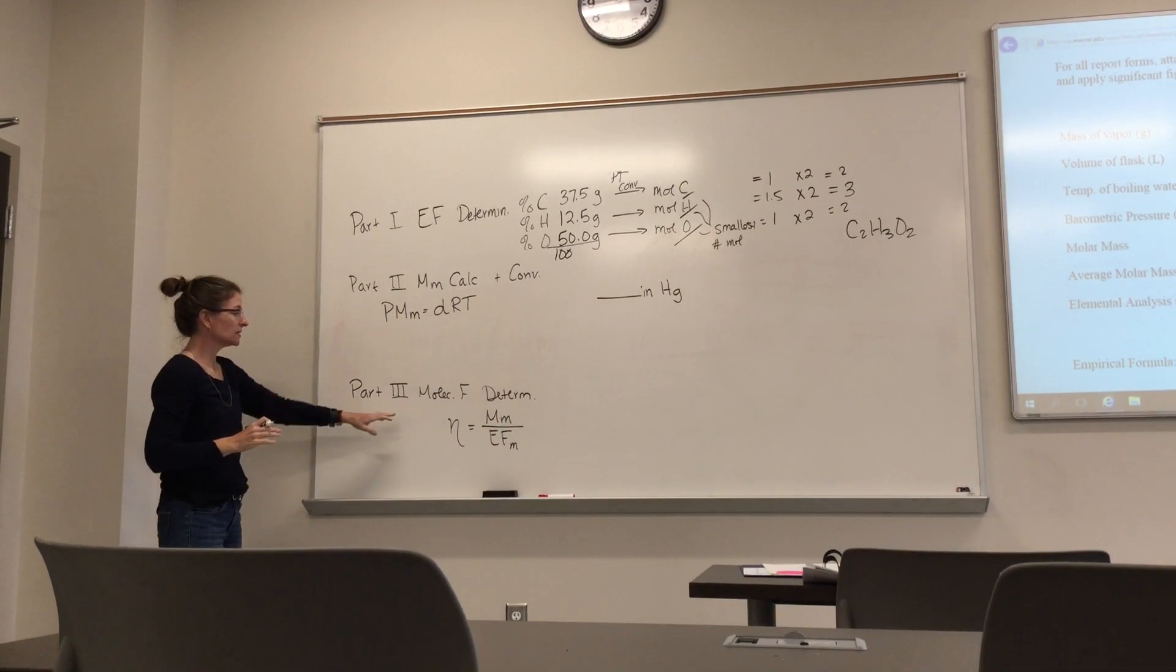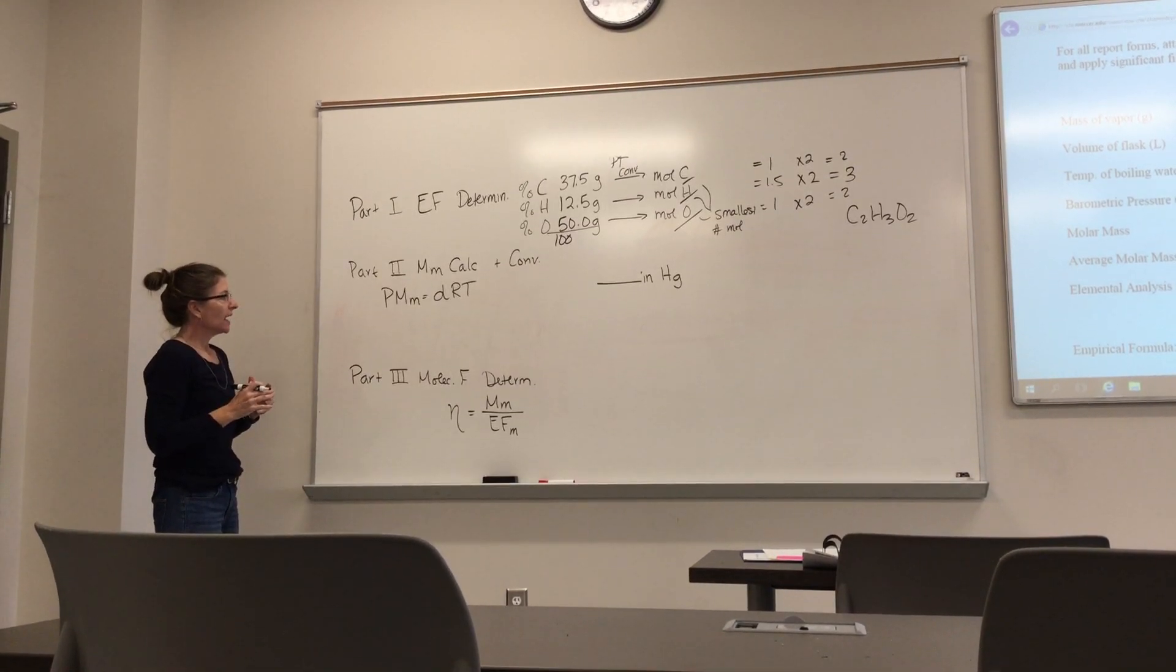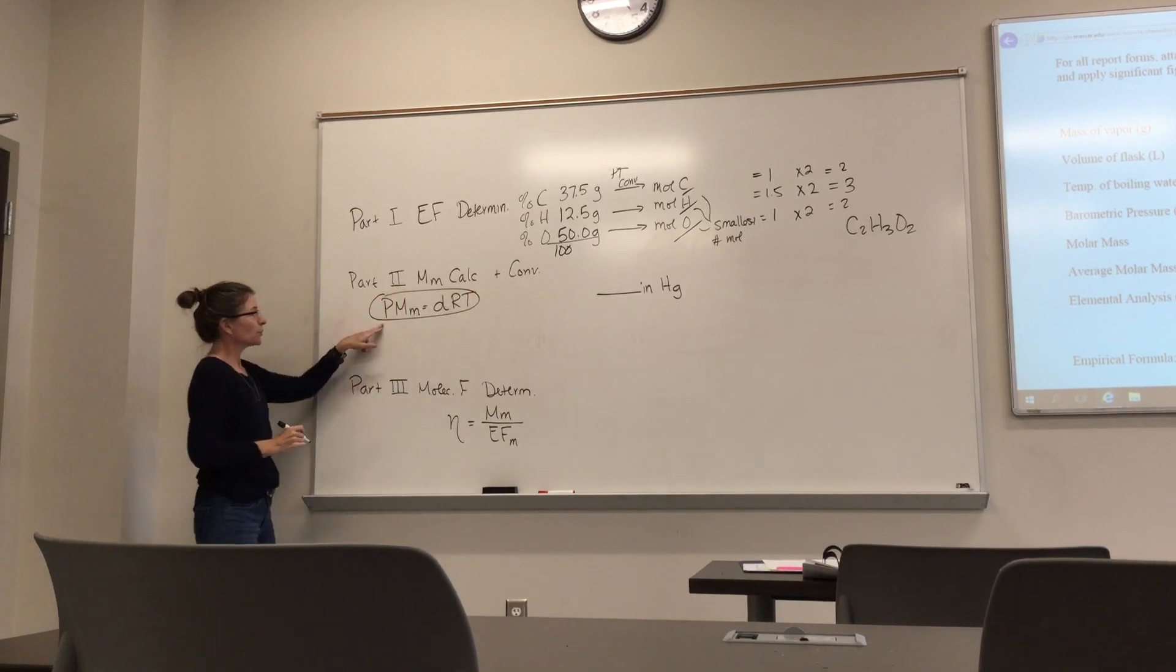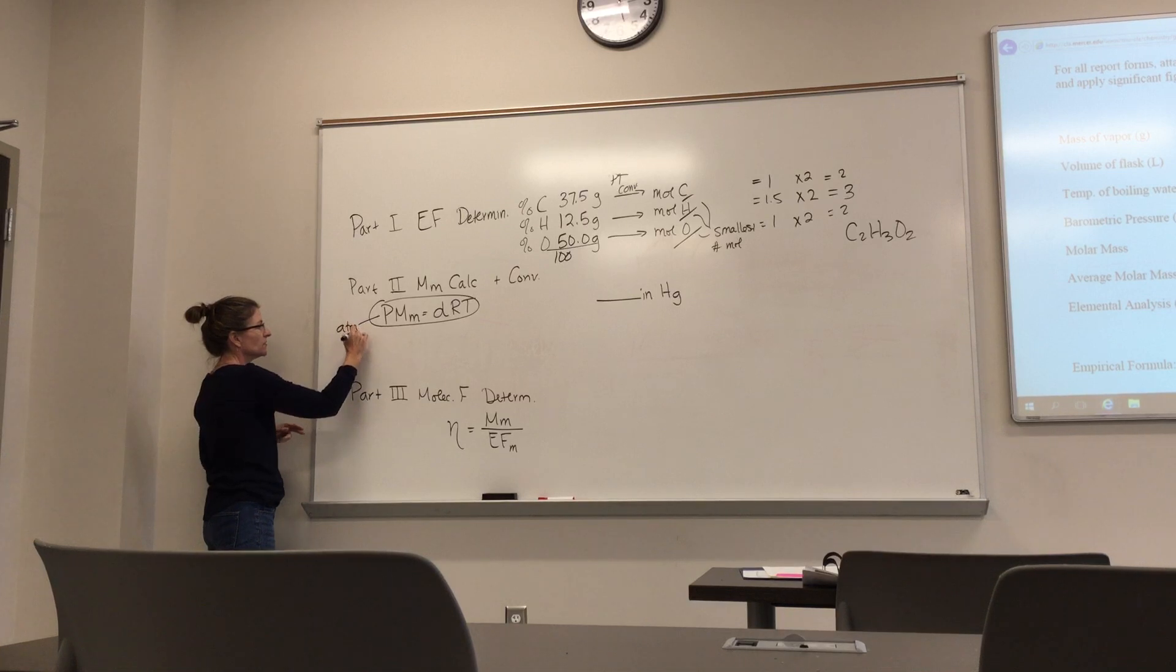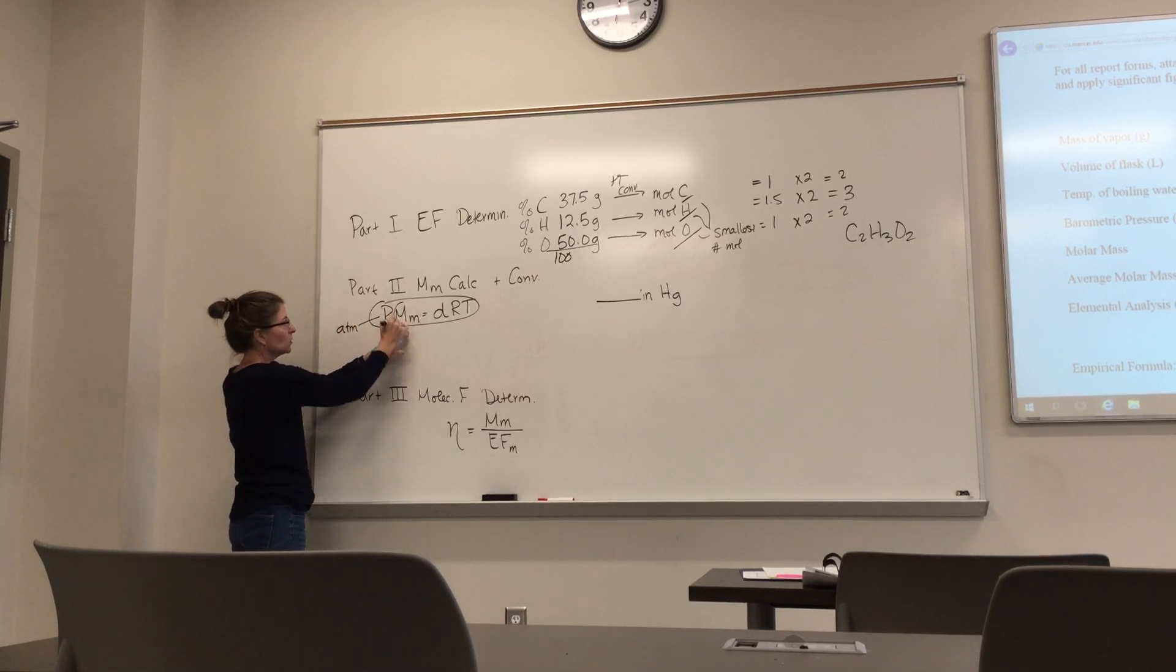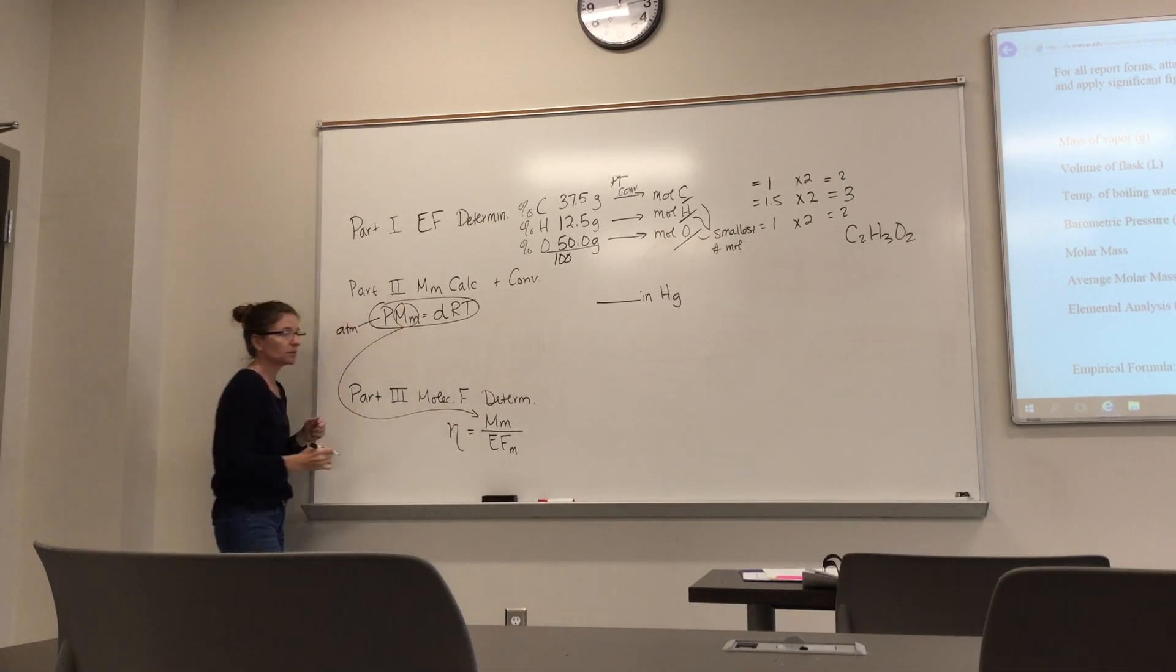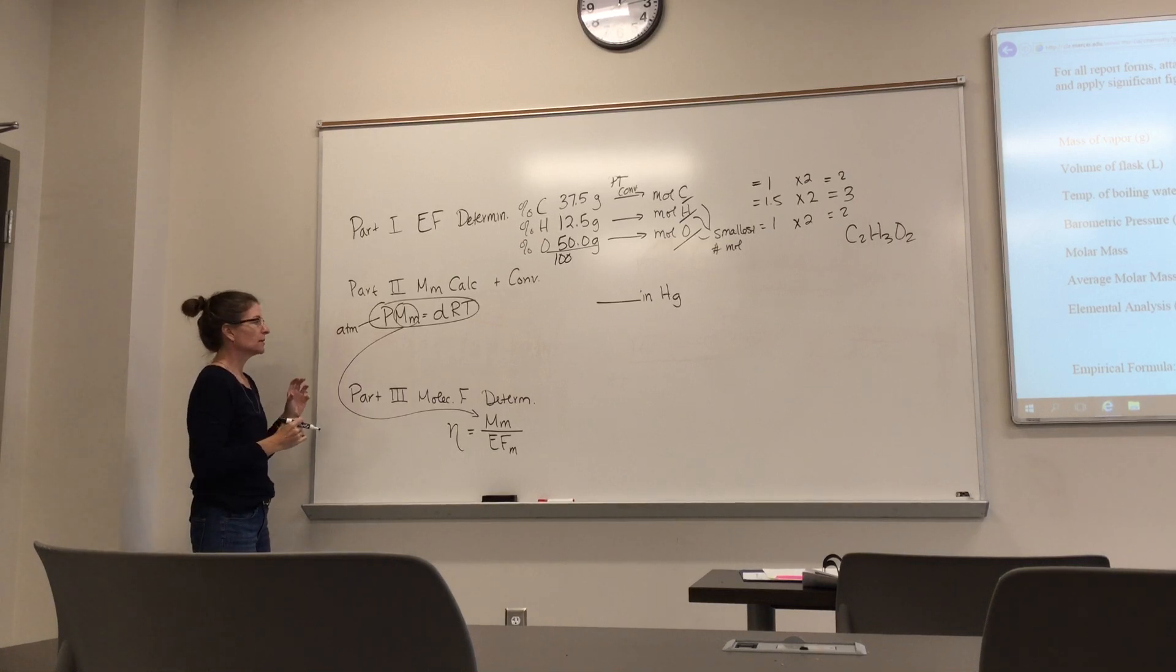So I'm not done yet. I've still got to get to molecular formula. Now this lab incorporates gas laws. And we learned in this chapter that we have this equation, which is pressure. And again, pressure needs to be in units of atmosphere. We have molar mass. This molar mass is what we're looking for, because we're going to use it here in this molecular formula determination. So that molar mass should be in grams per mole.